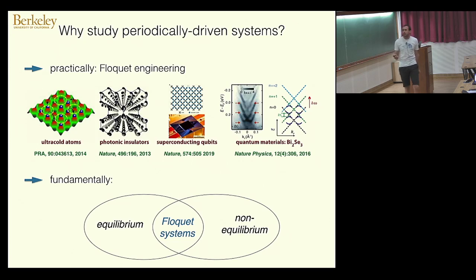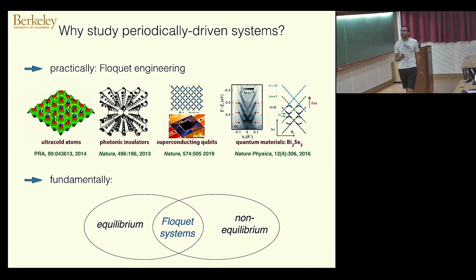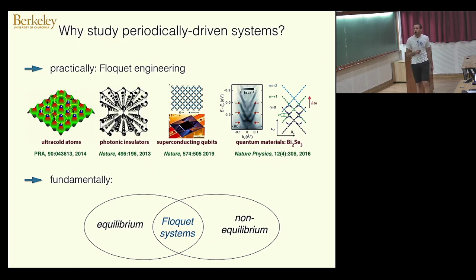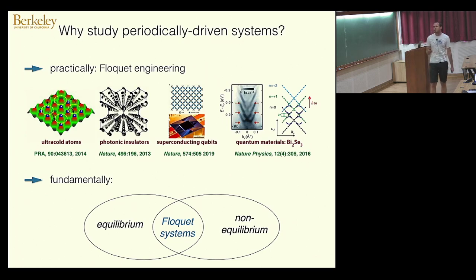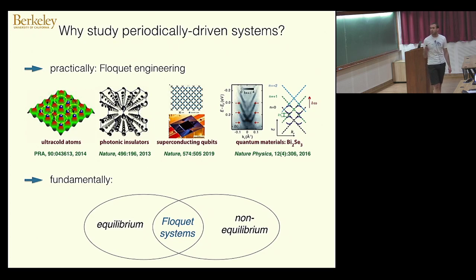You can think of it in the following way. If you have the world of equilibrium and the world of non-equilibrium, then periodically driven or Floquet systems live at the boundary of equilibrium and non-equilibrium. Yesterday we already heard a talk about Floquet phases of matter which are truly non-equilibrium and do not have equilibrium counterparts. Floquet systems are particularly suitable for approaching the non-equilibrium realm.